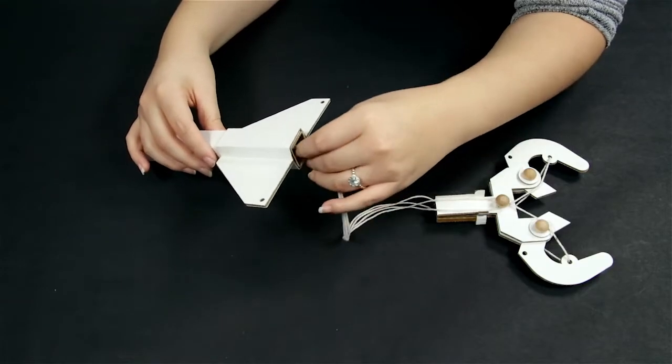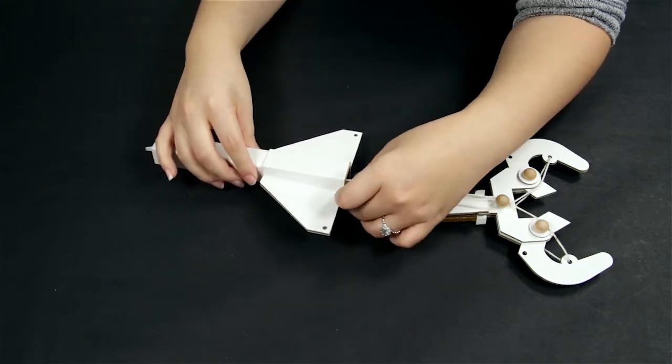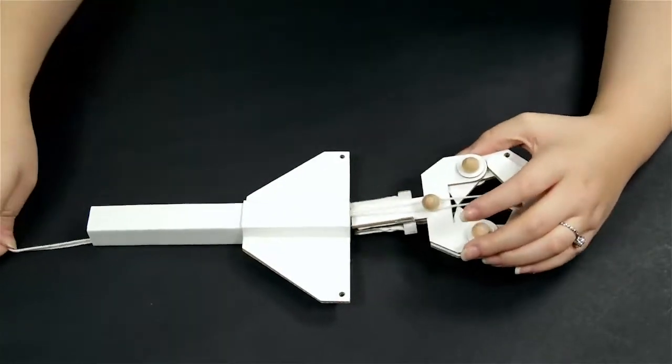Step 15: Insert the assembled claw into the end of the tube that has the part C's, carefully feeding the strings through the tube arm. Step 16: Glue the claw into place.